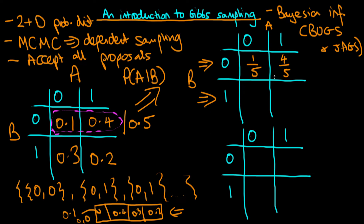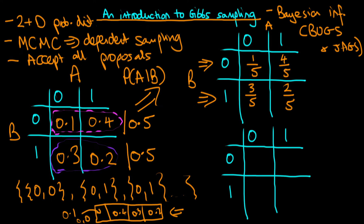Now we create a different valid probability distribution, where we condition on B being equal to 1. When B equals 1, we are restricting ourselves to the bottom row, and again we need to renormalise by dividing each probability by the row sum. We get a value of 3 fifths — that's 0.3 divided by 0.5 — and then 2 fifths. So again we get a valid probability distribution in this bottom row.